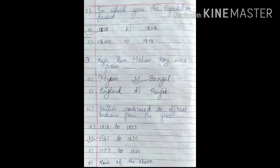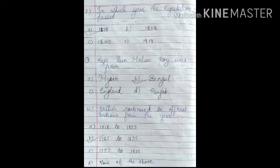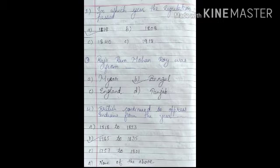The second MCQ: in which year was Regulation Third passed? The options are 1818, 1808, 1840, or 1918. Regulation Third was passed in 1818, so the answer is Option A — 1818.